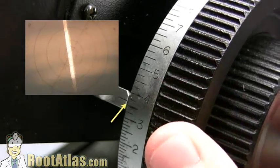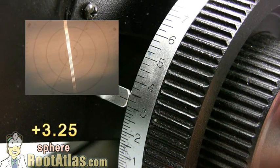If you look at our dial here in our focus, we can see this is a 3.25. That is the sphere. The sphere is 3.25.